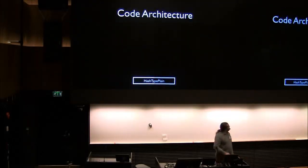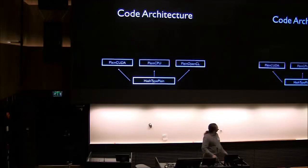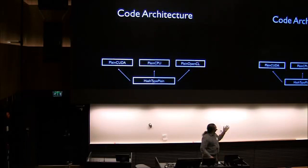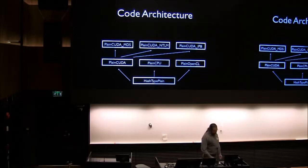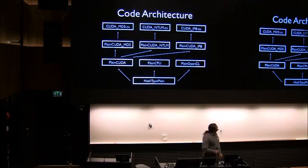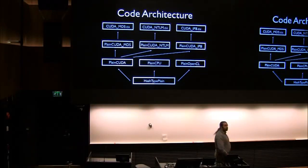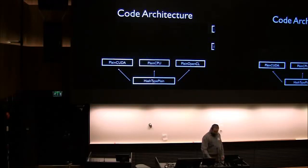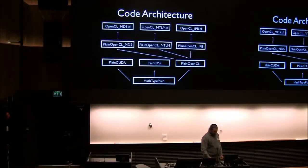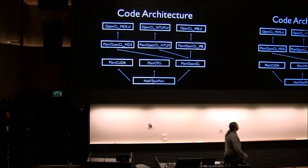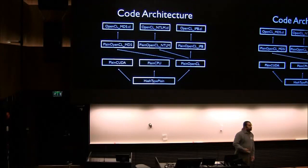To bring this to a slightly more concrete example, the hash type plain class extends up to the CUDA, CPU, and OpenCL classes. CUDA would expand out to the various hash types, each of which has their specific device kernel attached. The OpenCL version is pretty much the same thing. The bulk of the code is down at the lower level, so you can reuse it and not have to code things up for each specific hash type.